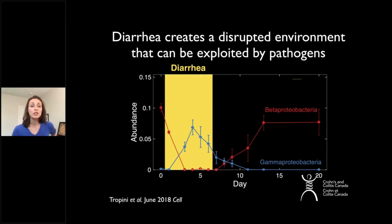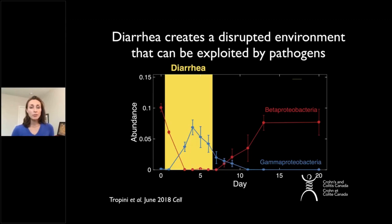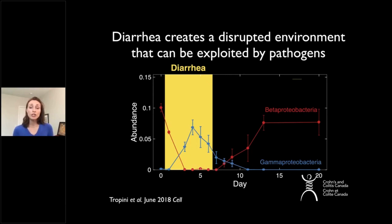Here I'm showing a plot of the abundance of specific bacteria, where 0.1 would represent 10% of all bacteria, over a time course. These animal models had six days of mild diarrhea, and during that period you can see an increase in bacteria called gamma proteobacteria — your typical E. coli or Proteus — which tend to be more pathogenic. We also find a commensurate reduction in other bacteria that tend to be more protective.